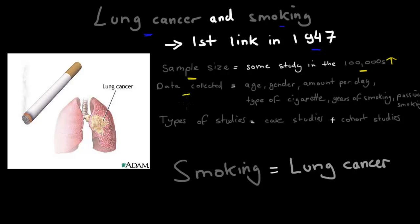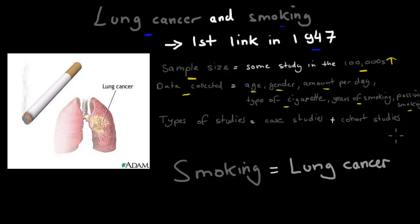We always focus on collecting relevant data. For example, we collect participants' age, gender, the amount of cigarettes they smoke per day, the type of cigarettes, the years they've been smoking, and their exposure to passive smoking. From that data we found that the older you are, the more at risk you are of lung cancer; the more you smoke, the higher the risk; the longer you've been smoking, the higher the risk; the stronger the cigarettes, the higher the risk; and the more you're exposed to passive smoking, the higher the risk of lung cancer.